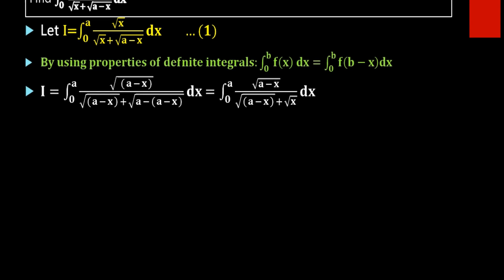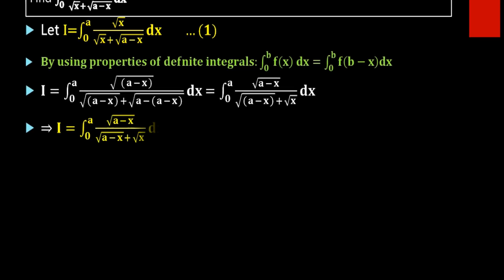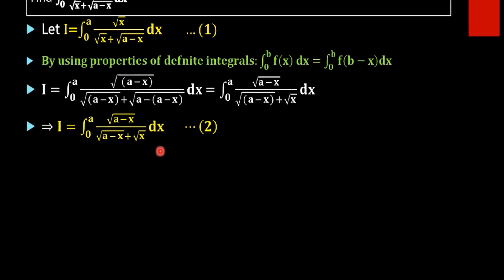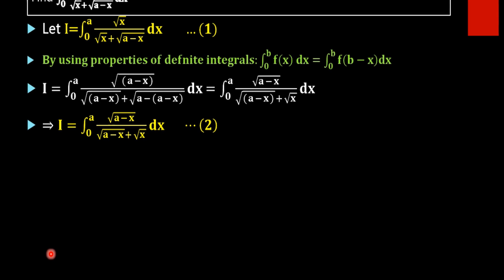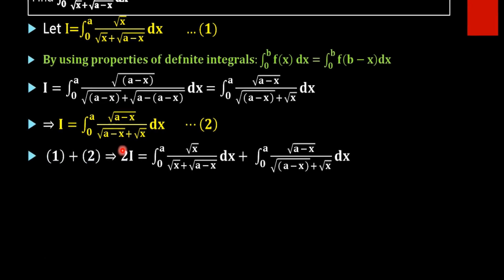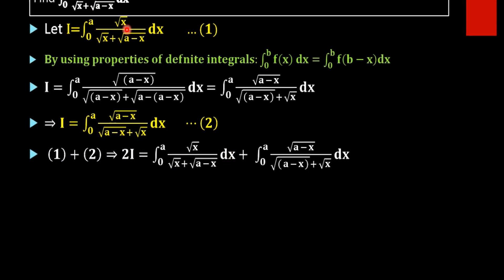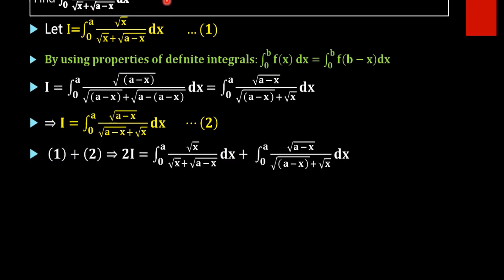We take i equal to integral 0 to a of root(a minus x) divided by root(a minus x) plus root x dx as equation number two. The next step: i plus i gives 2i, which equals equation one plus equation two.